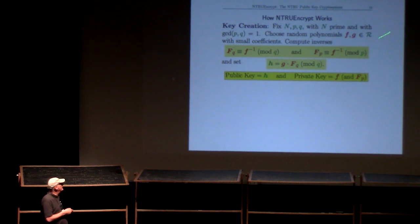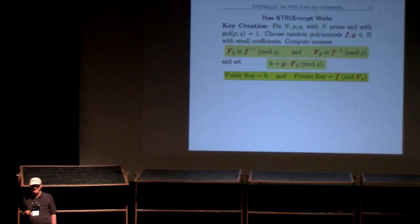Alice needs to choose her secret key, and her secret key is two polynomials having small coefficients—usually just zeros, ones, and minus ones. There better be enough of those polynomials in the ring so that Eve can't run through and check all of them.